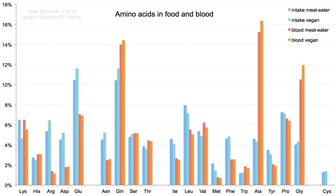Amino acids are usually classified by the properties of their side chain into four groups. The side chain can make an amino acid a weak acid or a weak base, and a hydrophile if the side chain is polar or a hydrophobe if it is nonpolar. The phrase 'branched chain amino acids' or BCAA refers to amino acids having aliphatic side chains that are nonlinear — these are leucine, isoleucine, and valine.